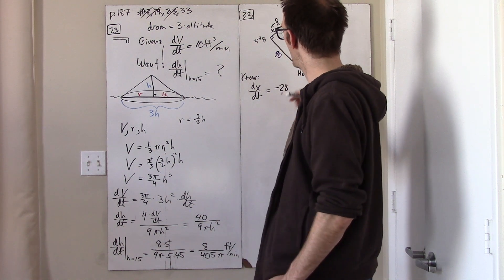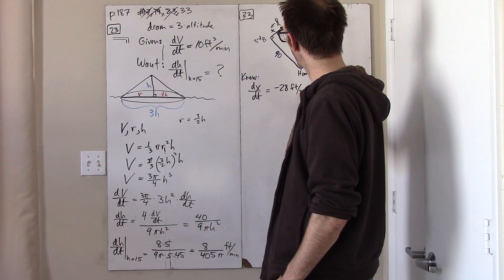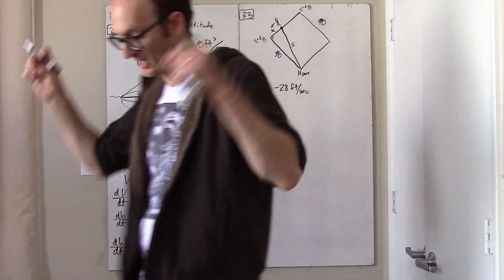Or, if we're being careful, which is not that important, it's negative 28 feet per second because, in fact, x is getting smaller.